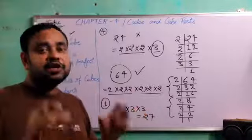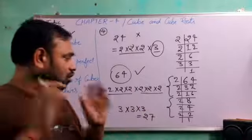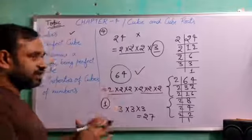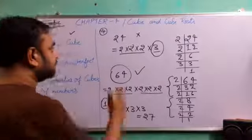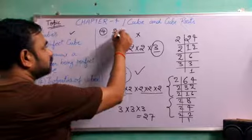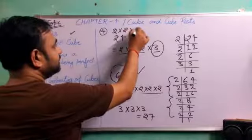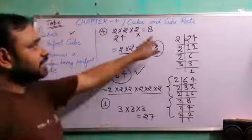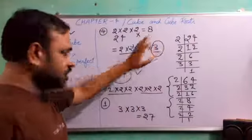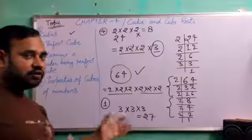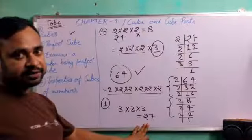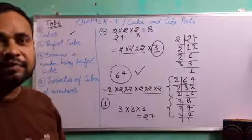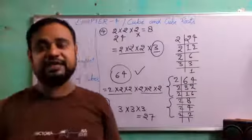And our fourth fact, cube of all even numbers will be always even. We can take any of the even numbers. Suppose we have taken 2. 3 times when we multiply 2, we will get 8. So cube of an even number will always be an even number. And cube of an odd number will always be an odd number. So these are some facts. You can study also it by your books that you are provided already.